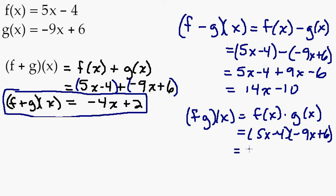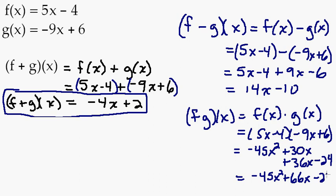And I guess if we wanted to make that look a little nicer, we could foil that out and simplify it to be negative 45x squared plus 30x. I'm going to run out of room here. I'll write it underneath. Plus 36x. So now I'm taking negative 4 times negative 9x. And then negative 4 times negative 6 is negative 24. So we add those together and we get negative 45x squared plus 66x take away 24.